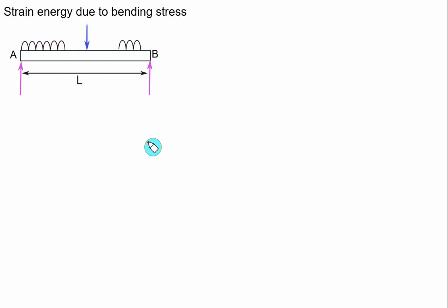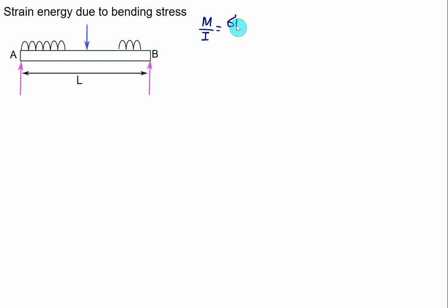Strain energy refers to the internal energy stored within a solid material due to deformation when the beam is subjected to external loads like UDL, point load, or couple. This deformation causes internal bending stresses, which we can calculate using the flexure formula: bending moment M divided by moment of inertia I equals bending stress σ at a distance Y from the neutral axis.